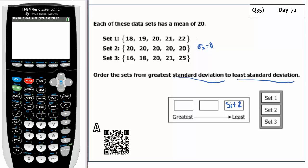So σx equals zero. This one, 18, 19, 20, 21, and 22, these are all increasing by one. And 16, 18, 20, 21, 25, these are all kind of increasing by one or two or more. So I'm pretty sure that this is going to be the greatest standard deviation.